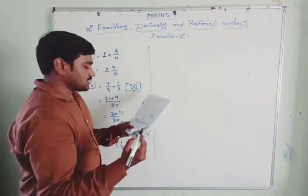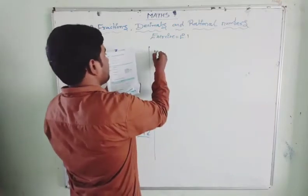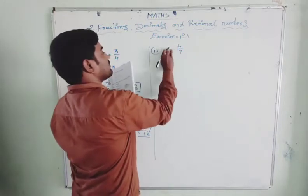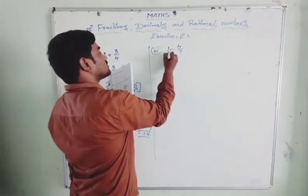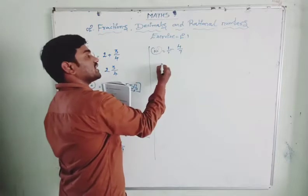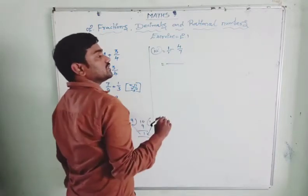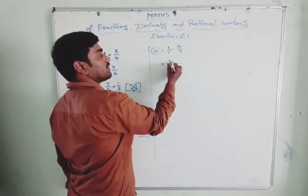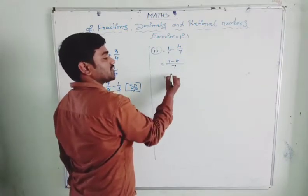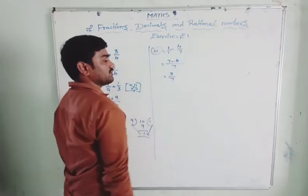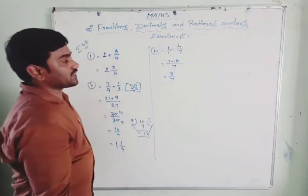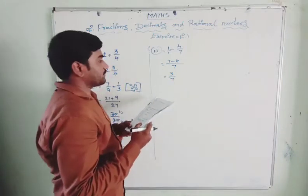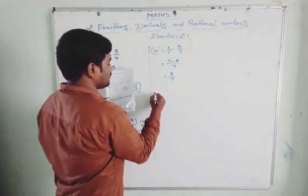Third one: 1 minus 4 by 7. Write 1 as 1 by 1 and apply cross multiplication. 1 into 7 is 7; 7 into 1 minus 4 is 7 minus 4, which equals 3 by 7. So the answer is 3 by 7.